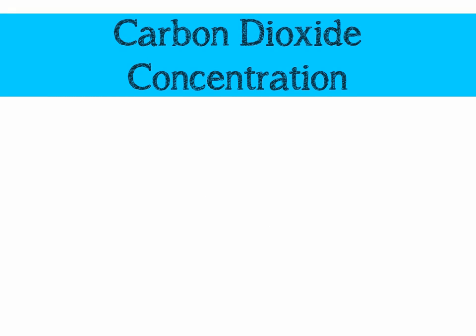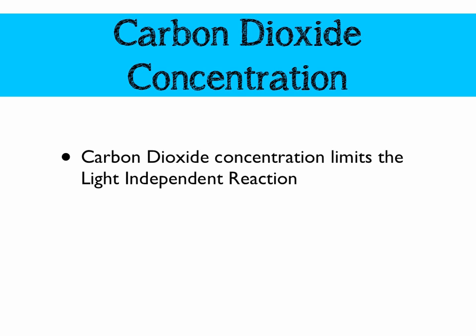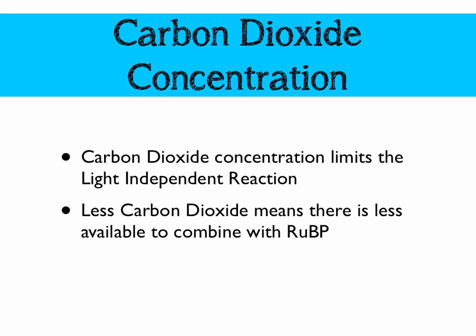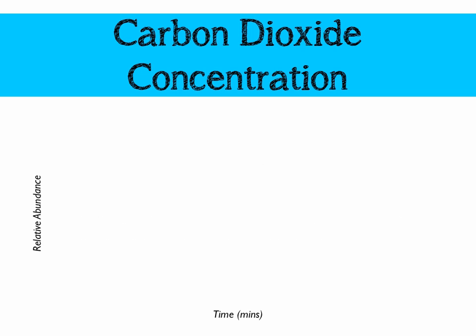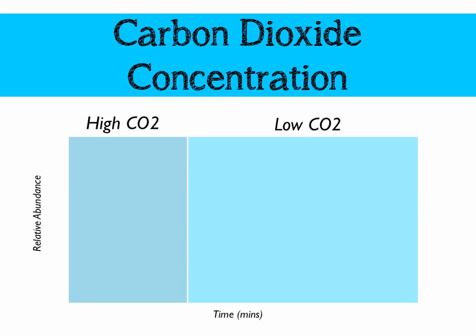Moving on, we're going to look at carbon dioxide concentration, which is going to limit the light independent reaction. Less carbon dioxide means that there is less CO2 available to combine with ribulose bisphosphate. To look at that on a graph, we're going to move a plant from where there is high CO2 to where there is low CO2, and the compounds we're going to be looking at are ribulose bisphosphate or RuBP and glycerate-3-phosphate or G3P.